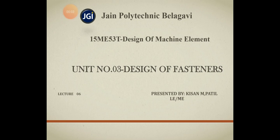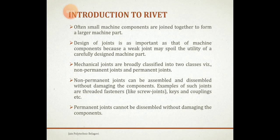Welcome back to the sixth lecture on the design of fasteners. Today we will be starting the second part of the chapter, that is the design of rivets. As we saw previously, there are basically two types of joints: one is permanent and one is temporary. Fasteners come under the category of temporary joints, whereas the category we are viewing now is the permanent joint — meaning once you join the two parts, it is very difficult to disassemble them without damaging them. This is the key difference between riveted joints and fasteners.